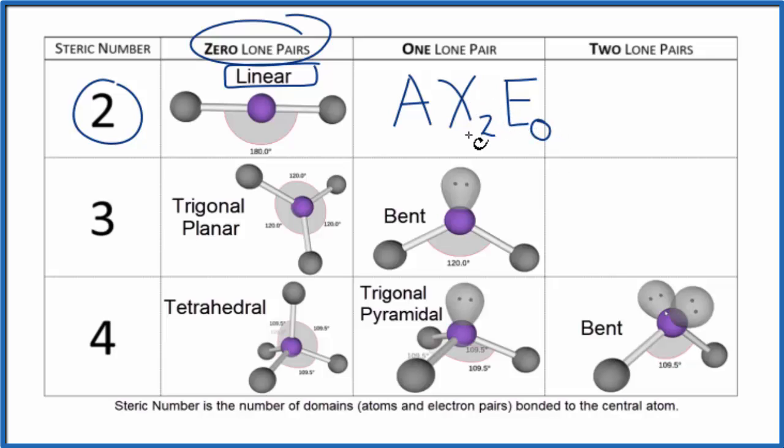Then you would either memorize that AX₂ is linear, or you could look it up on a table if you were allowed. So this is Dr. B with the molecular and electron geometry of BeH₂, beryllium hydride. Thanks for watching.